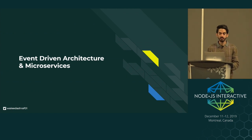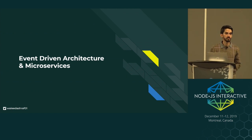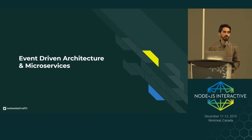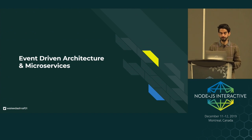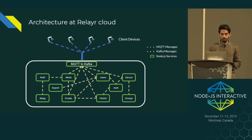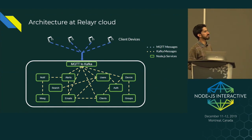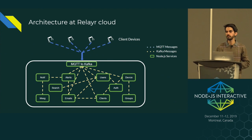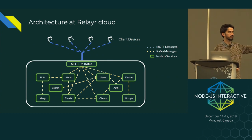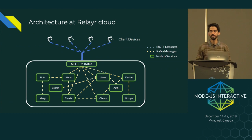This is happening in all microservice-driven architectures where you have multiple services communicating through these protocols, and you don't know how to have one source of truth for all the communication between services. We had client devices sending data through MQTT to our cloud, a broker which converts the MQTT message to relative Kafka messages, and then our services communicating internally through Kafka.